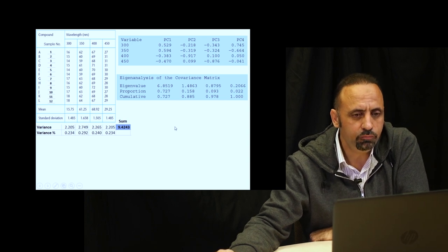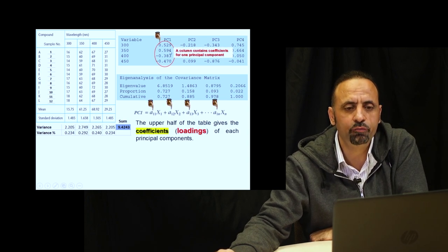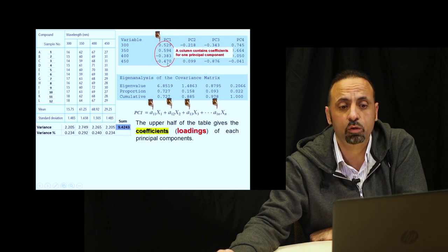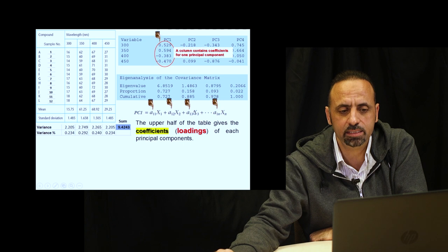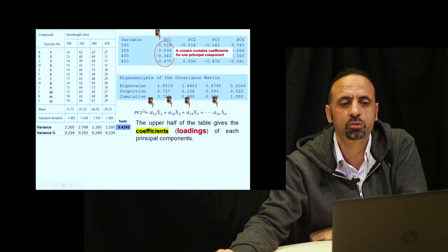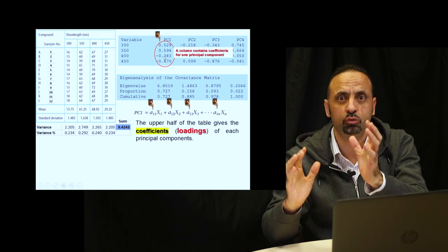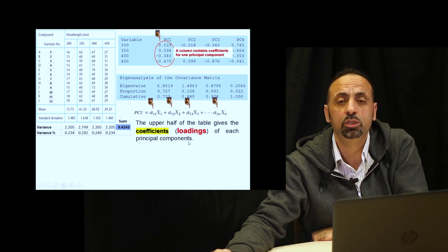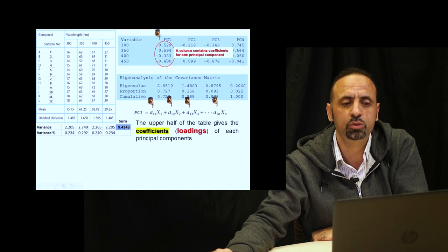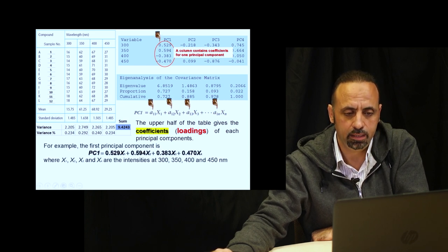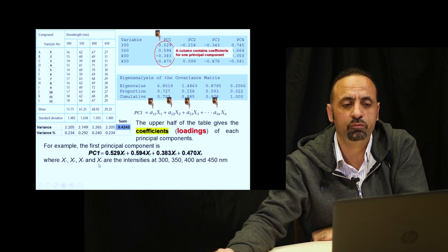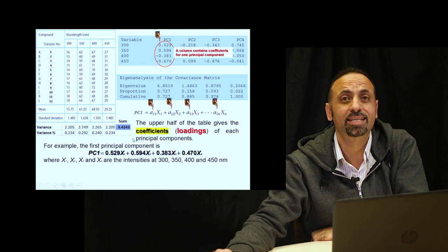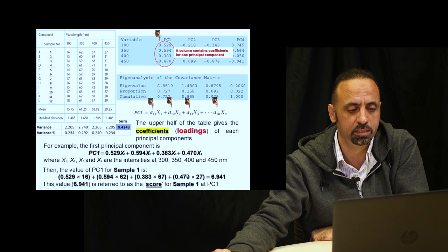The coefficients in each column of the principal components are called loadings. These loadings can be used to convert the normal axes — x1, x2, x3 — to principal components by making this rotation and projection. These coefficients are called loadings because they are the principal component coefficients used to make a projection, and they can convert the original x variables to a new variable called PC1 or PC2.